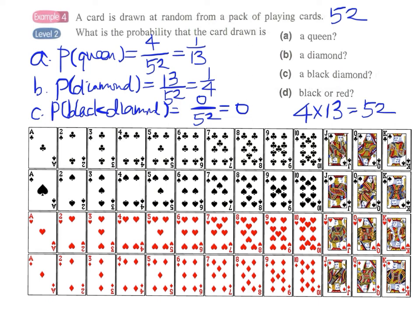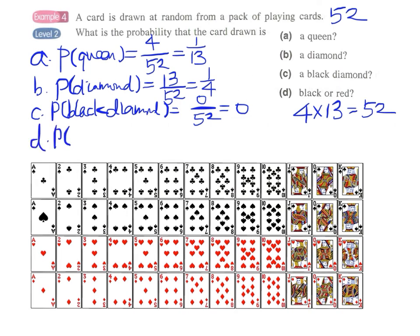We cannot find a black diamond. And finally part D, the card is either black or red. So we have 26 black cards and 26 red cards. So there are a total of 52 either black or red cards. So this will be 1. 52 over 52 equals to 1. And we call this a certain event. This must happen. Because we cannot find other colors in this pack of playing cards. It is either black or red.